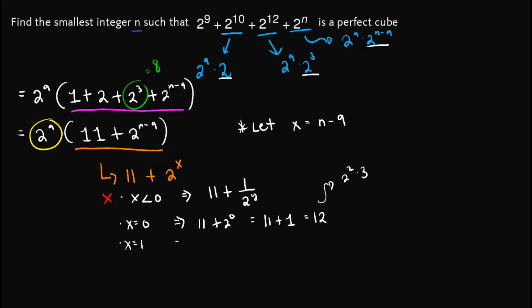If x is equal to 1, then we have 11 + 2^1, which is equal to 13, which is also not a perfect cube since 13 is prime.